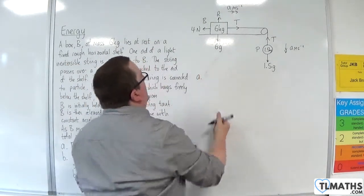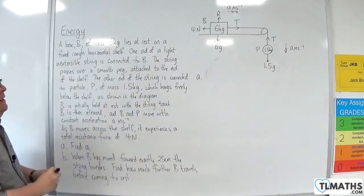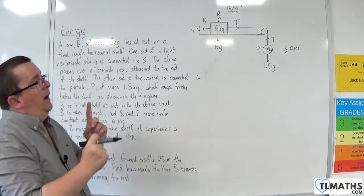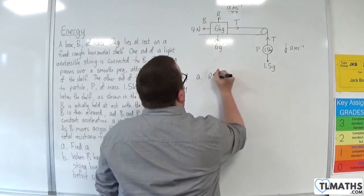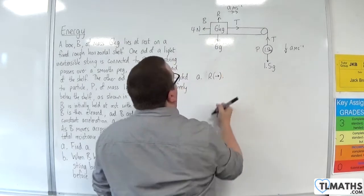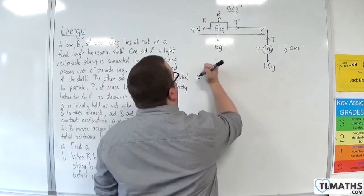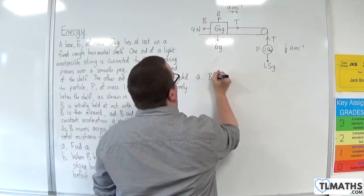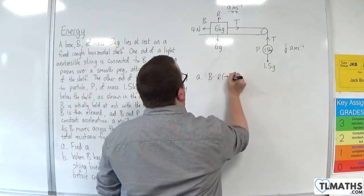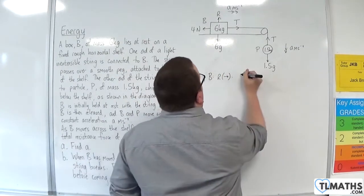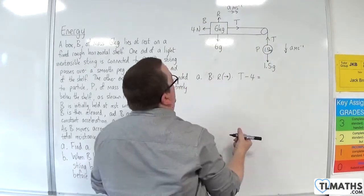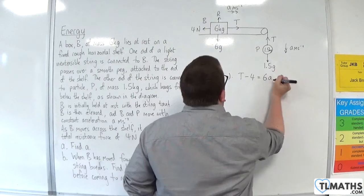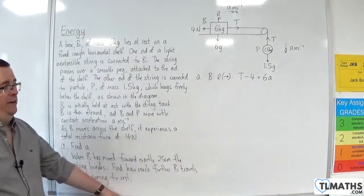So, for part A, what I'll do is I will resolve horizontally for particle B. So, resolve to the right for B. So, let's identify that. So, I'm working with particle B. I'm going to resolve to the right. So, I've got the tension, take away the 4 newton force, is going to be equal to the mass, times the acceleration. OK, so I'm using Newton's second law here.